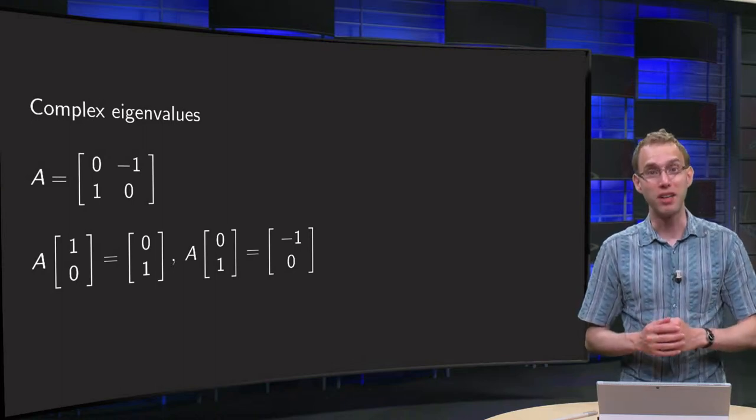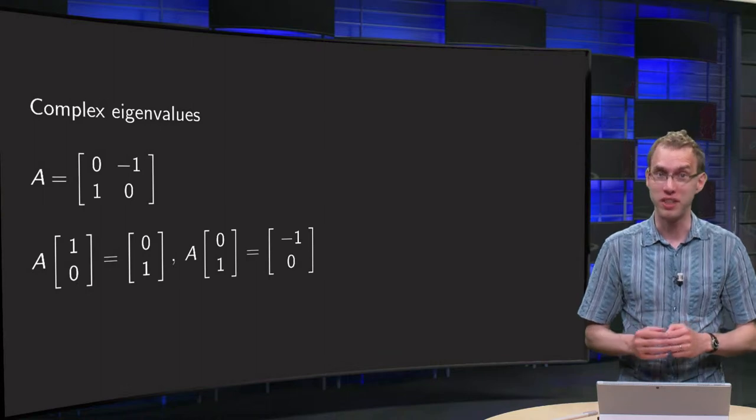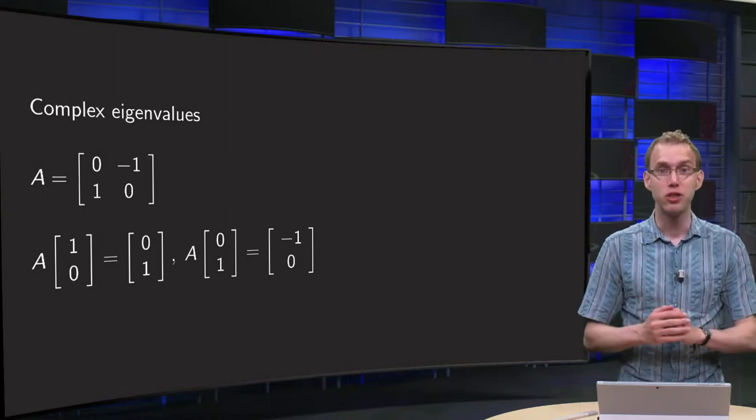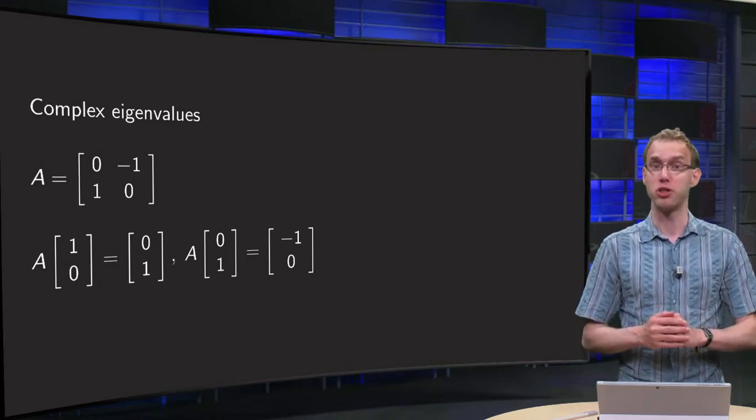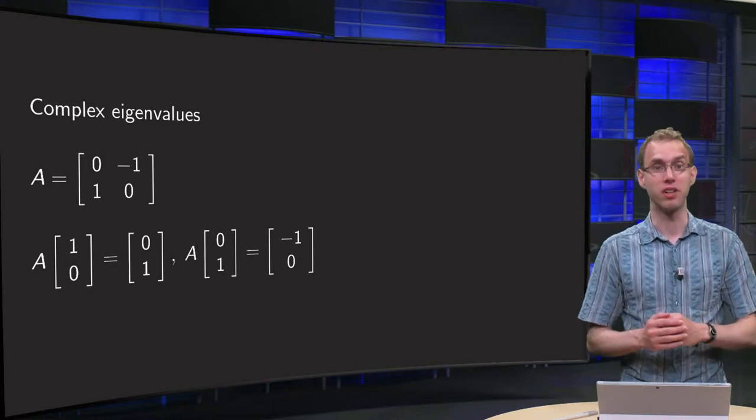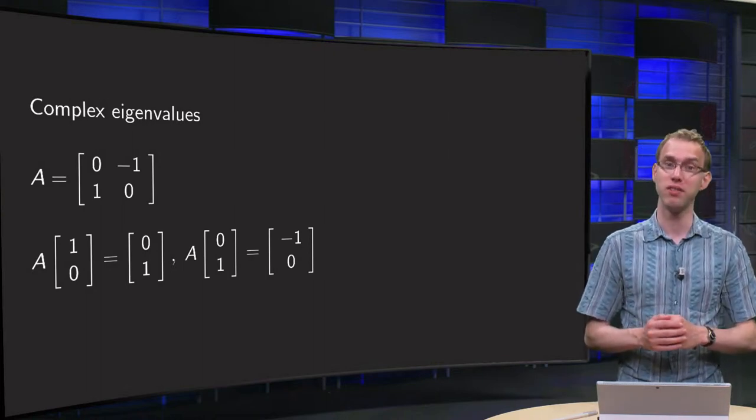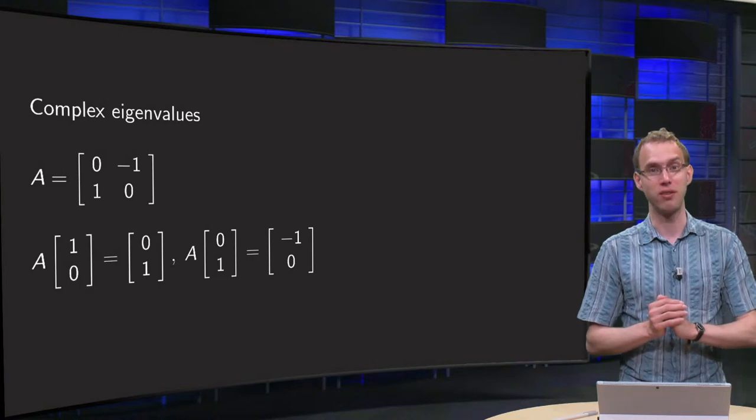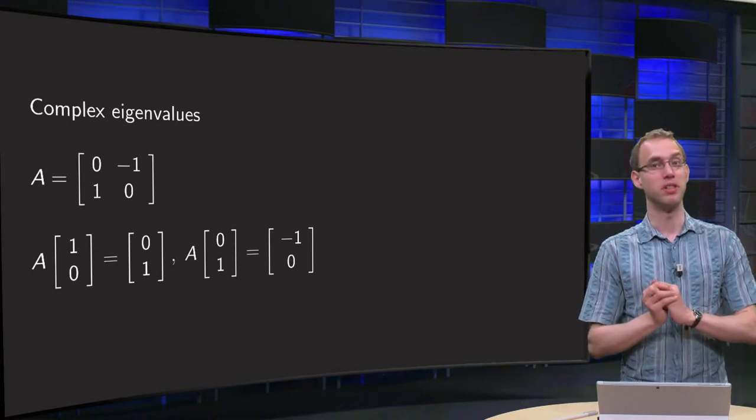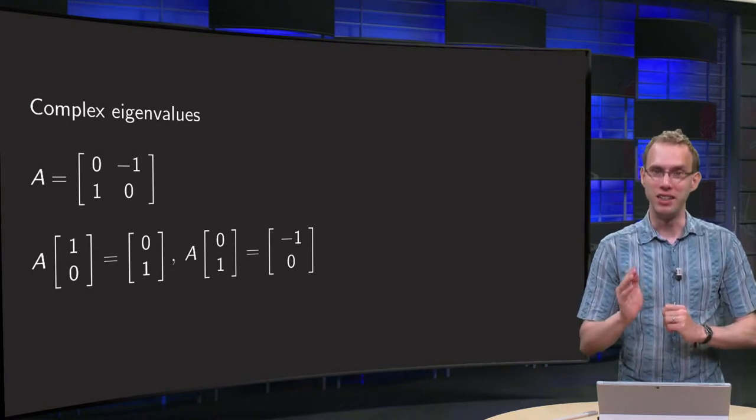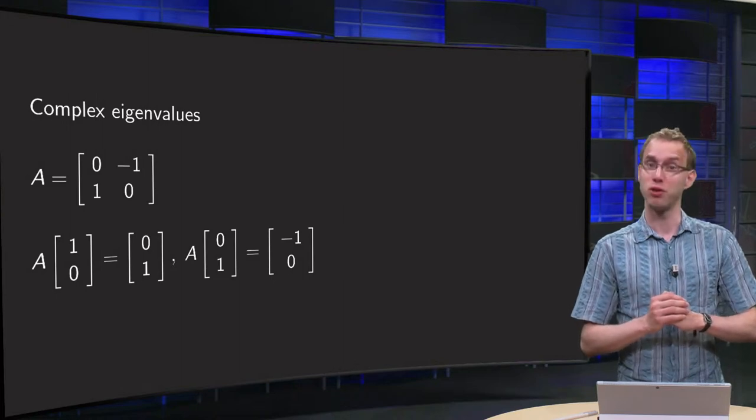You have learned to compute eigenvalues and eigenvectors of many matrices. In some 2D cases, however, you got stuck because the discriminant of the characteristic equation was negative, so you could not find eigenvalues. This is disappointing, of course. In this video, you will learn how we solve this problem.